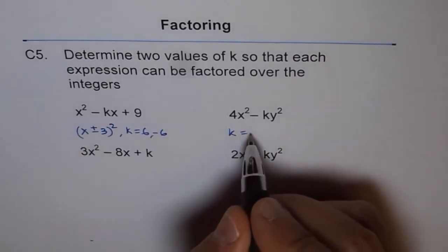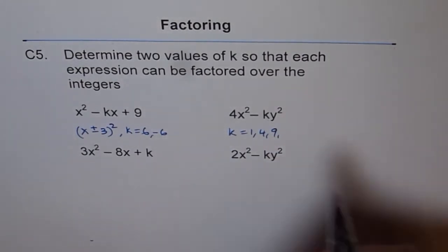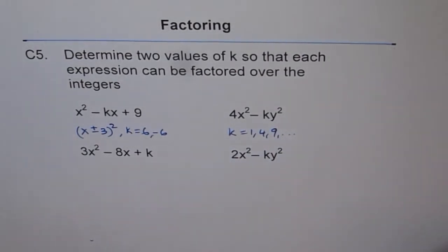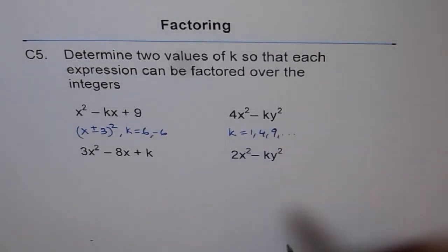So k values like 1 will work, right? 4, 9, it has to be a perfect square. All such values of k will work here, right? Because it becomes a square minus b square.